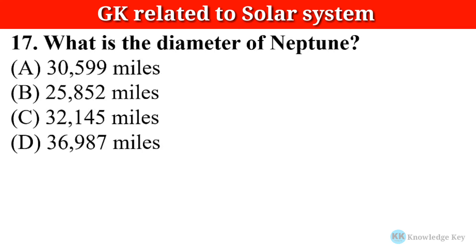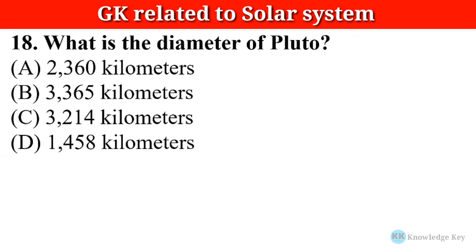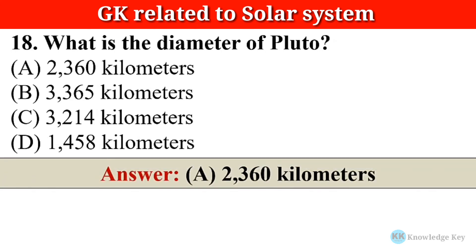Question number seventeen: What is the diameter of Neptune? The correct answer is option A — 30,599 miles, which is equal to 49,244 kilometers. Question number eighteen: What is the diameter of Pluto? The correct answer is option A — 2,360 kilometers.